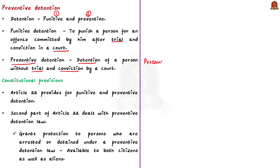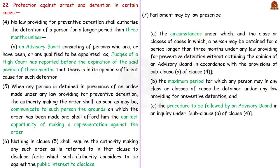What are the constitutional provisions that provide for preventive detention? We have Article 22 in the Indian Constitution that provides for two types of detention: punitive and preventive. The first part of Article 22 deals with cases of ordinary law and the second part deals with cases of preventive detention law. The second part of Article 22 grants protection to persons who are arrested or detained under a preventive detention law, and this protection is available to both citizens as well as aliens.